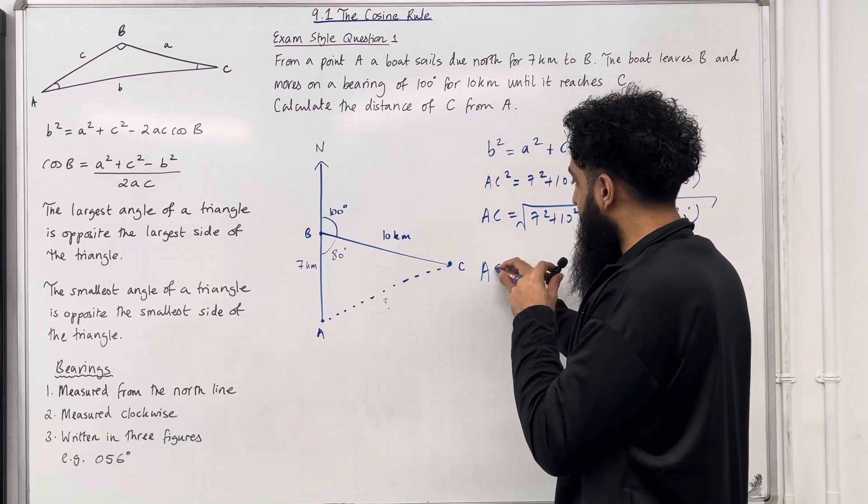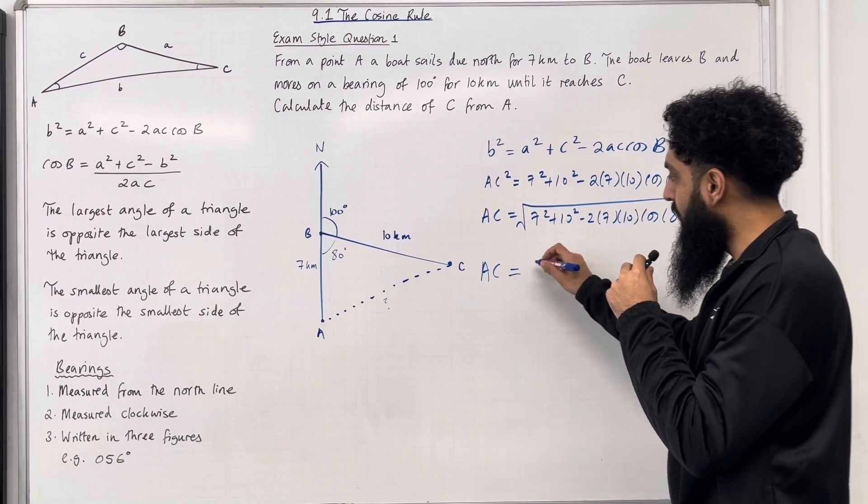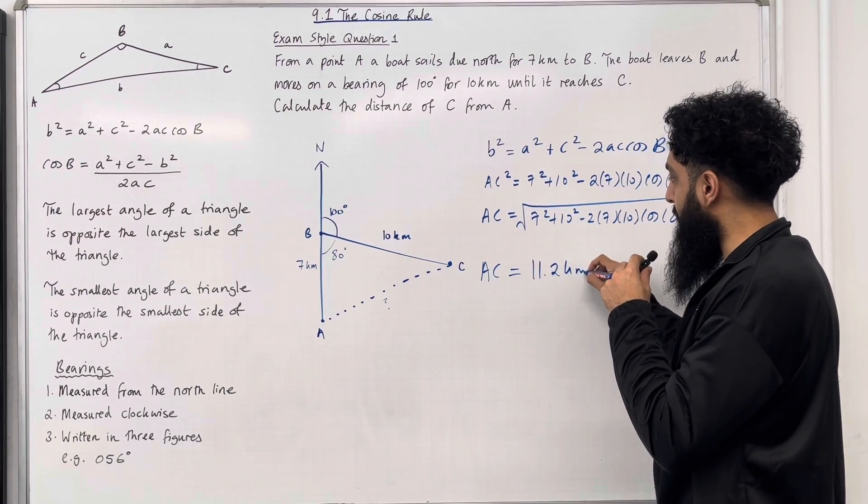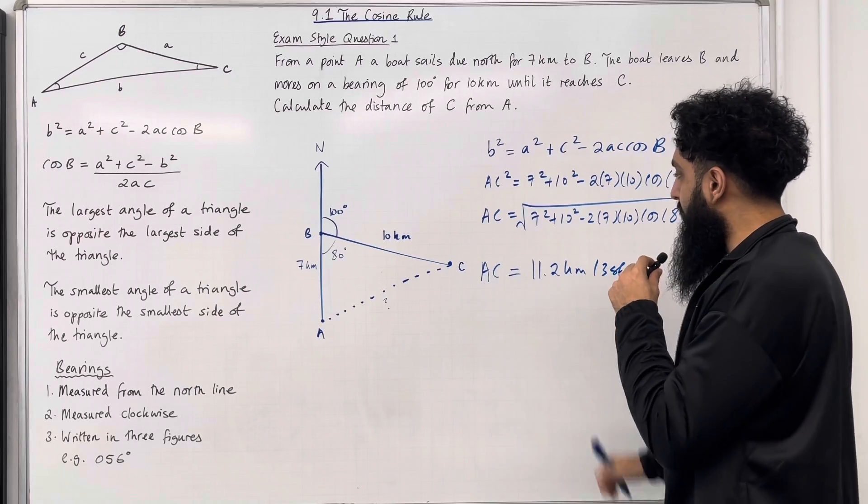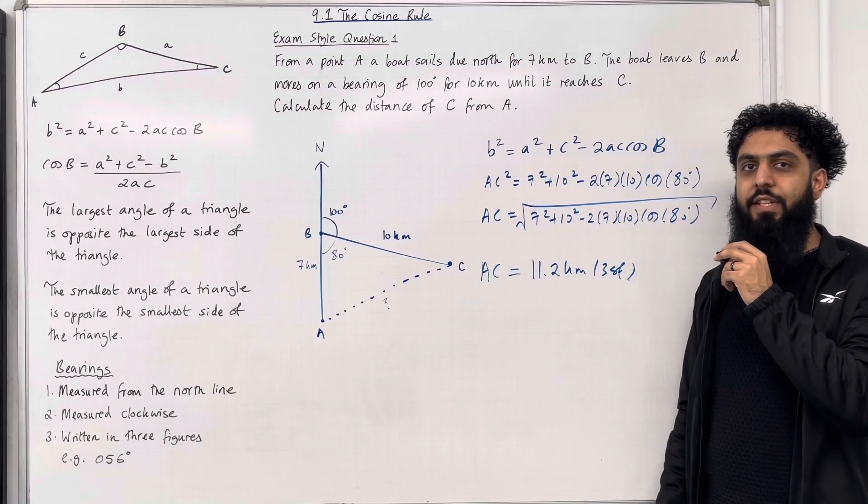Ladies and gents, I can put this into my calculator and round it off to three significant figures. This gives me 11.2 km. So the distance of C from A is 11.2 km to three significant figures.